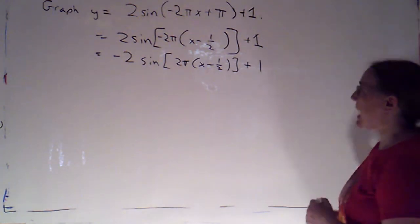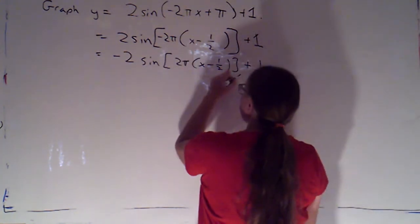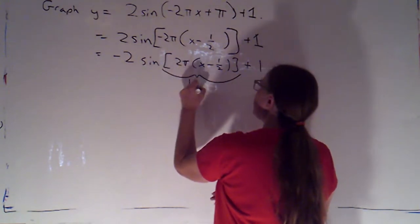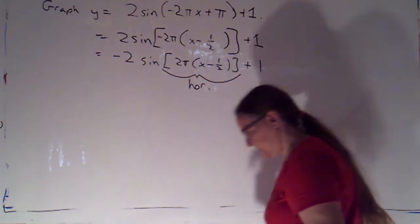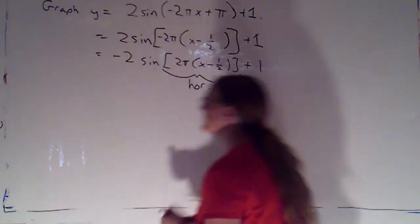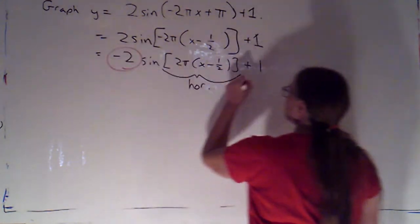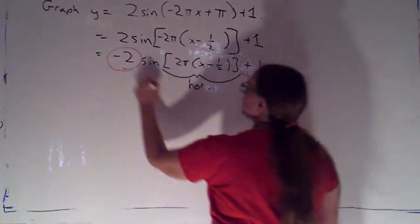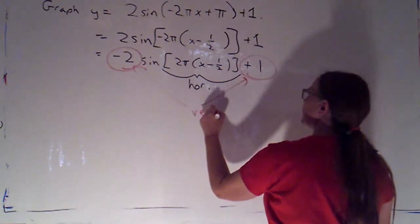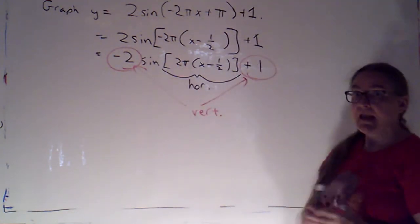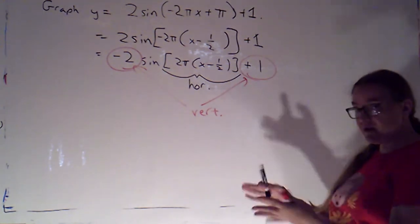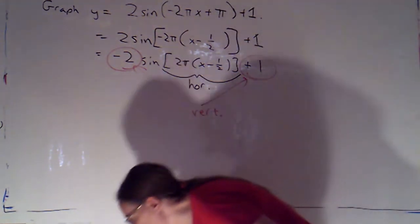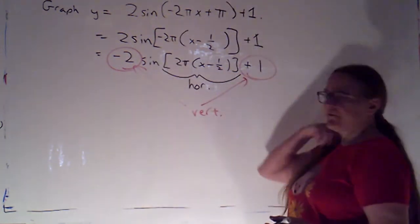So now, I know that everything in here, that's my input. That's going to affect my graph horizontally. The things that I'm doing after I evaluate sine, so multiplying by negative 2 and adding 1, that's going to affect the graph vertically. And I've learned how to deal with all the vertical and the horizontal transformations. So let's do the vertical first.